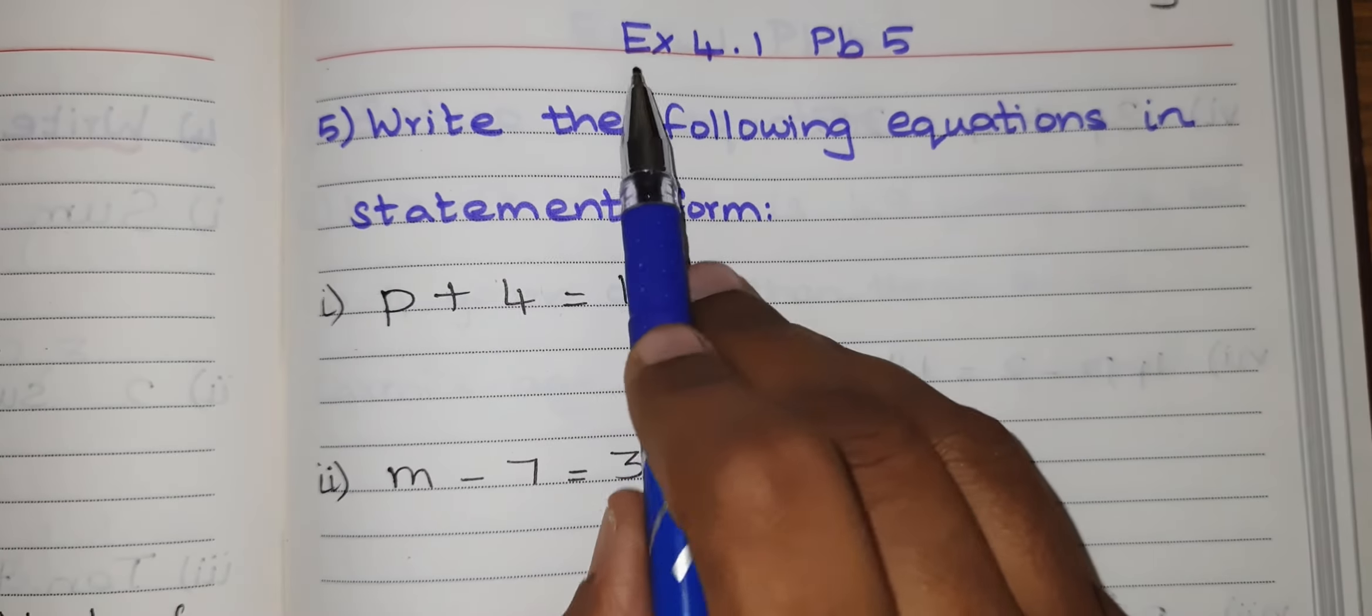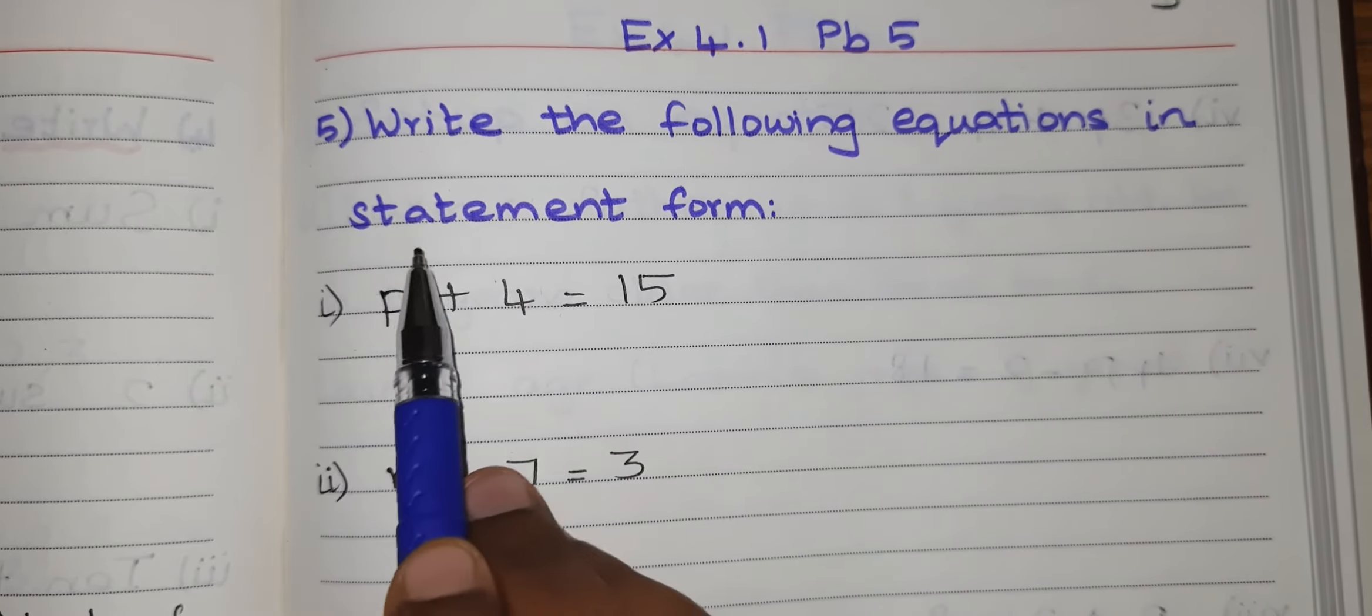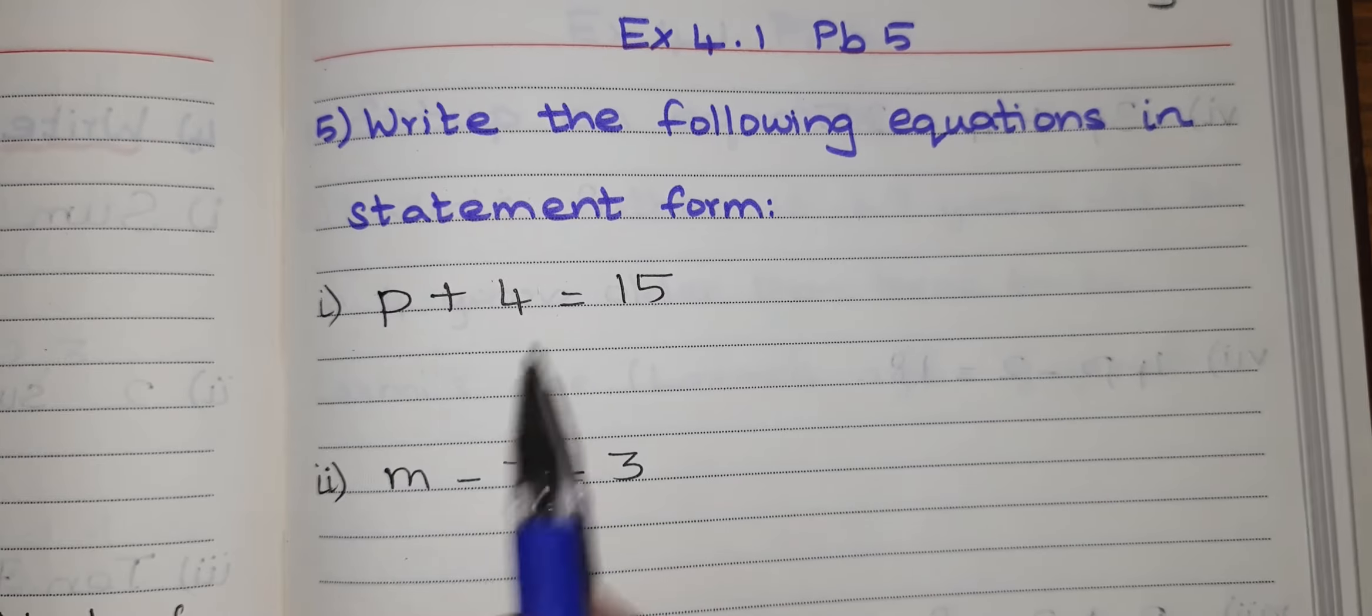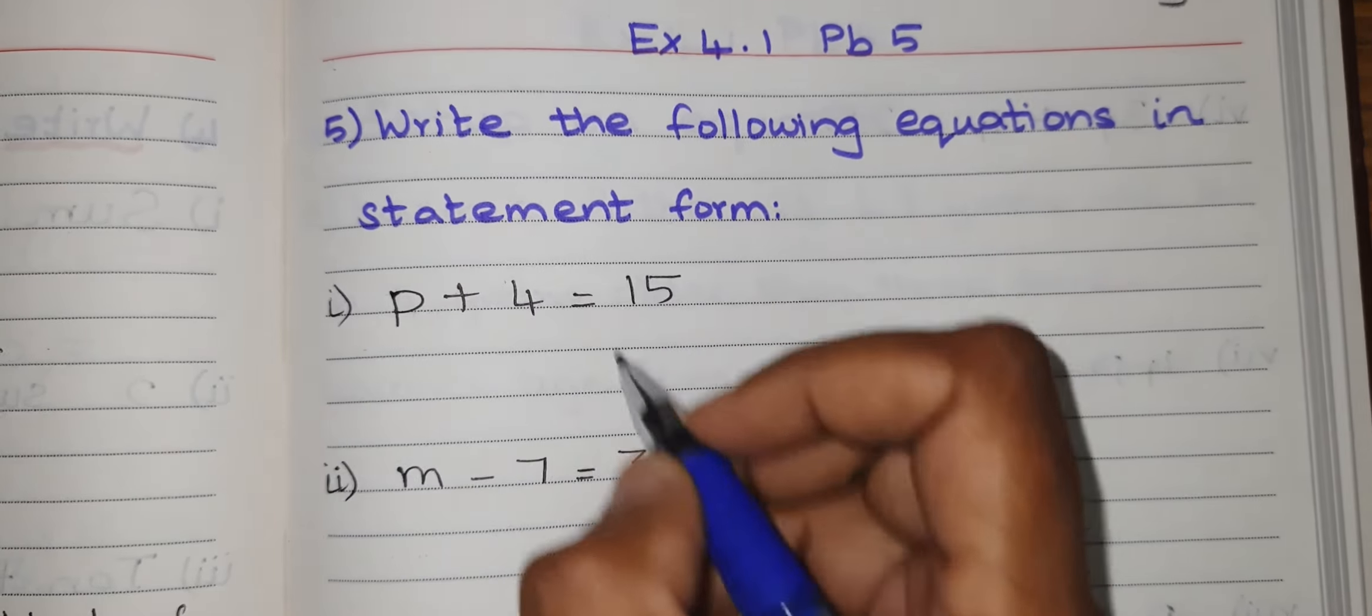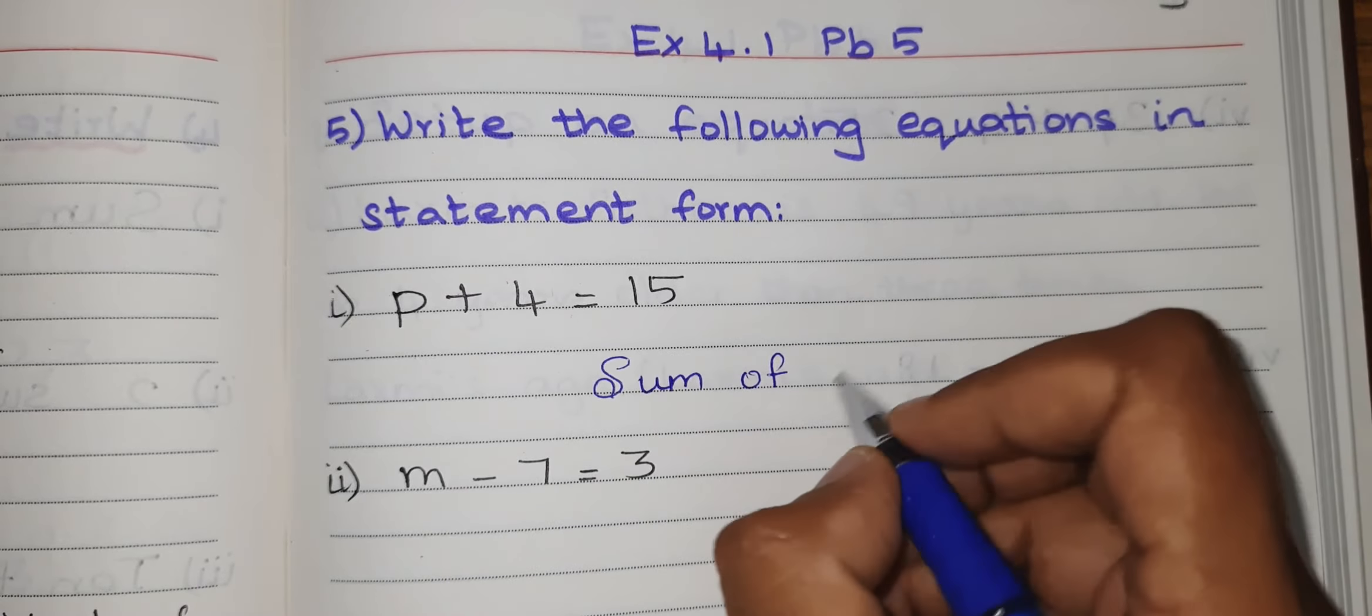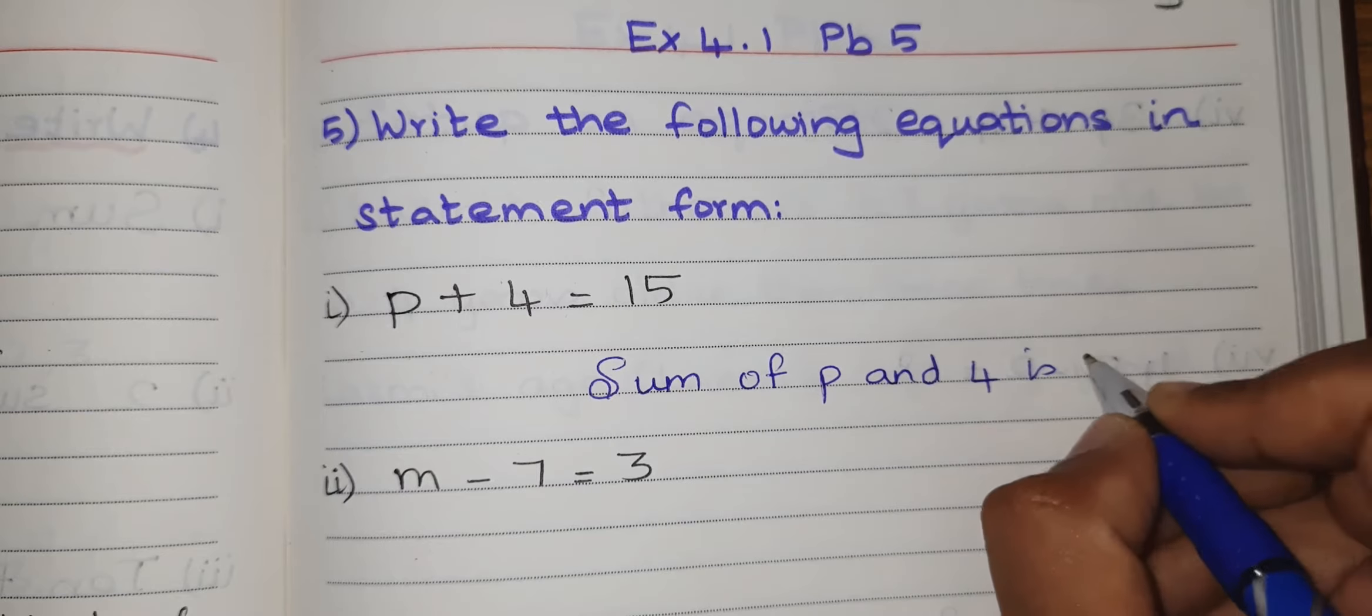Hello students, Exercise 4.1 Problem 5. Write the following equations in statement form. They have given the equation, I have to write in the statement form. p plus 4 equal to 15. Plus means I have to mention it as sum. So sum of p and 4. Instead of equal to, I have to write is. Sum of p and 4 is 15.